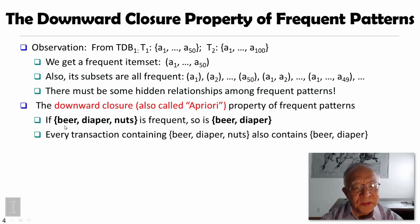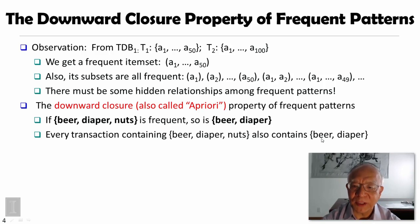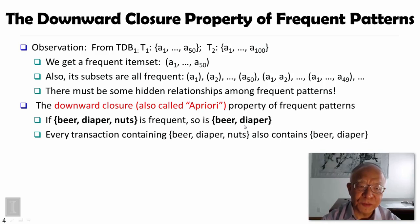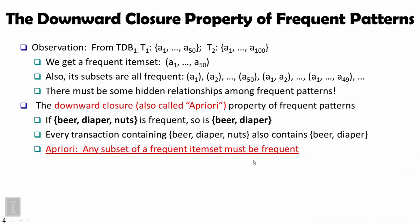Suppose we know that the itemset {beer, diaper, nuts} is frequent. Obviously, {beer, diaper} should be frequent as well, because any transaction which contains beer, diaper, and nuts must also contain beer and diaper as an itemset. That's why {beer, diaper} should be at least as frequent as {beer, diaper, nuts}. So we can derive that any subset of a frequent itemset must be frequent, given the same minimum support threshold.